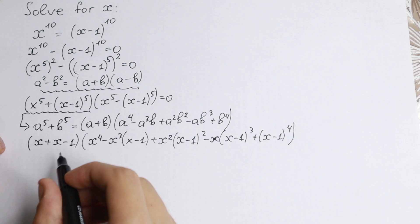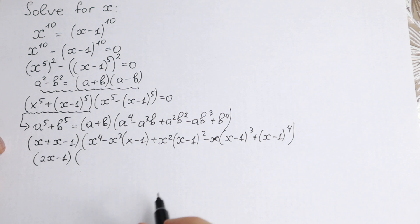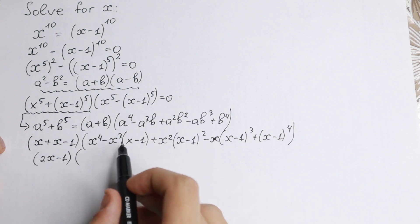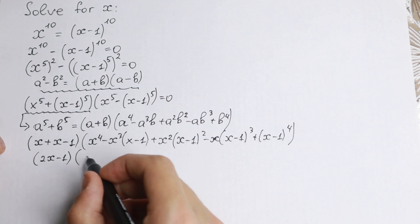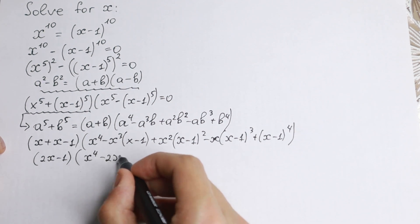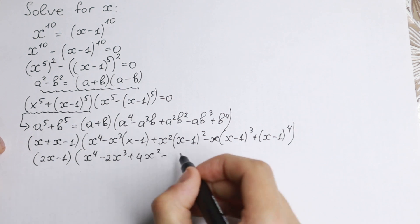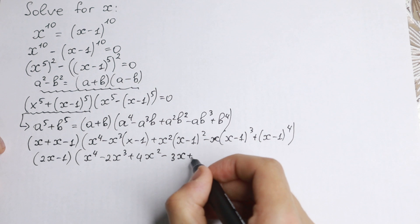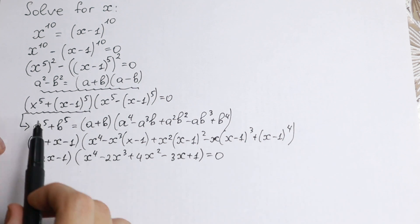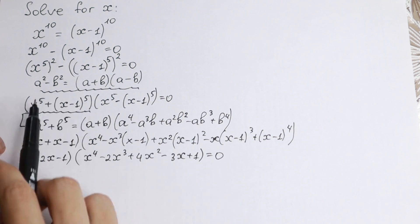Simplifying, the outer factor becomes 2x minus 1. Opening all the inner parentheses gives us x to the fourth minus 2x cubed plus 4x squared minus 3x plus 1, equal to 0. This is the simplified form of the first factor.